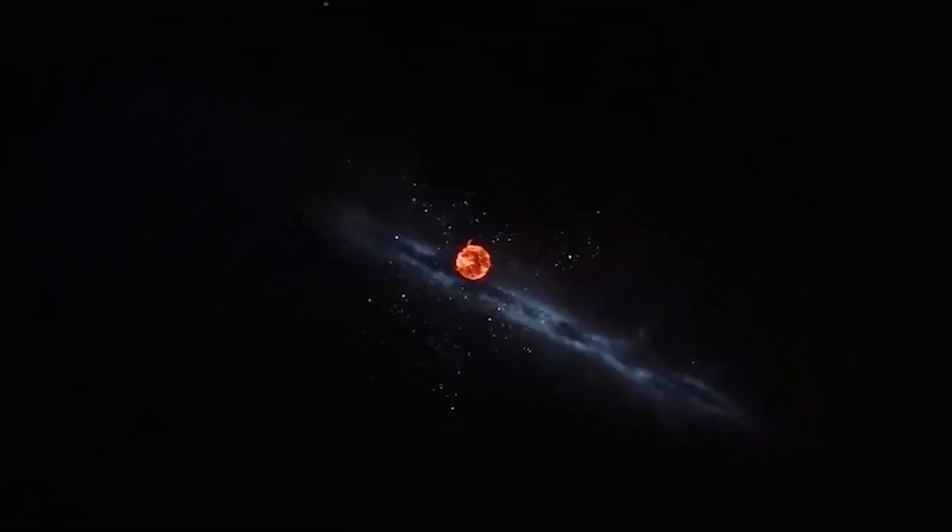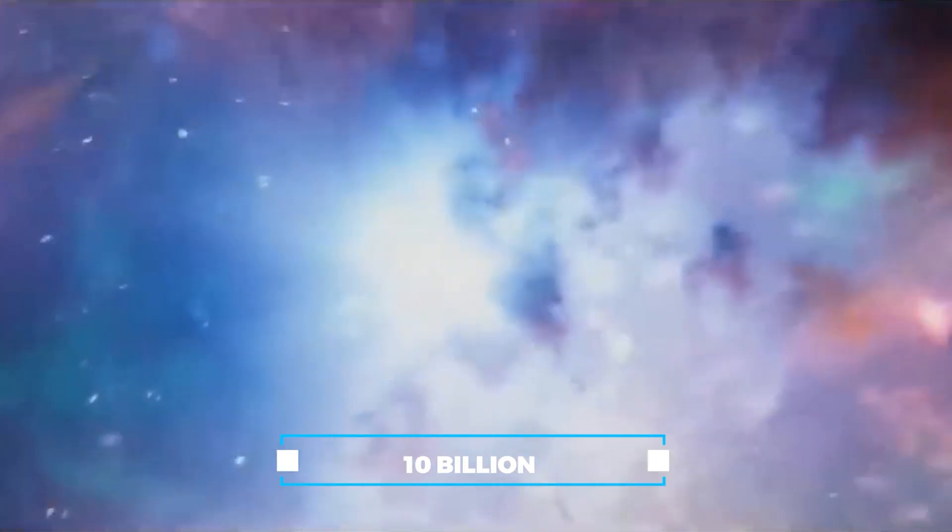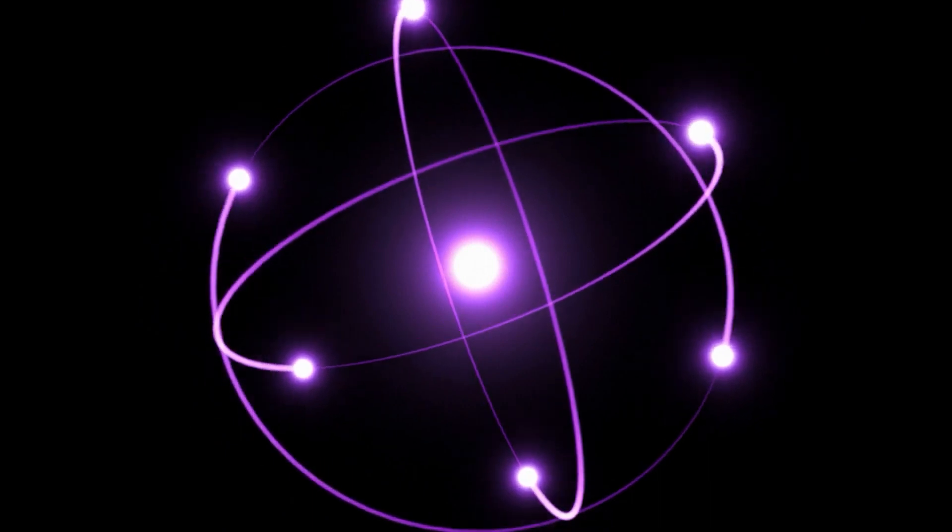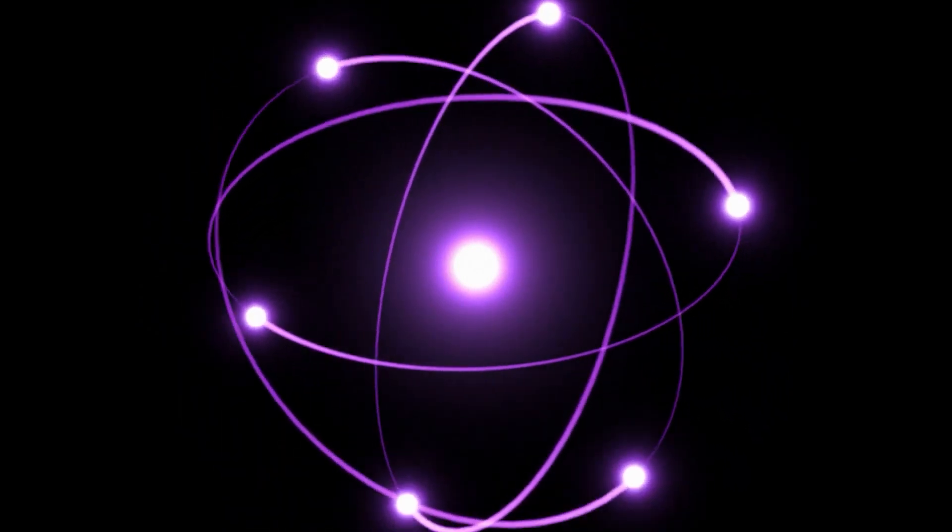About one millionth of a second after the Big Bang, it had cooled down to about 10 billion degrees. At this point, tiny particles called quarks joined together to create protons and neutrons.